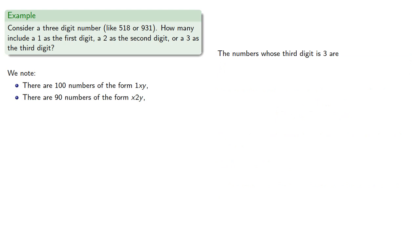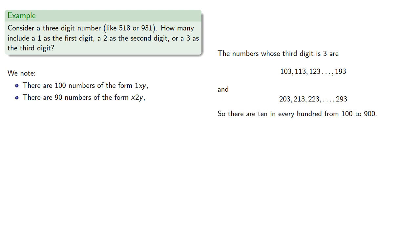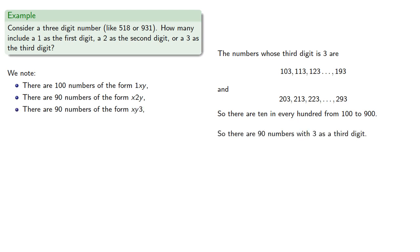The numbers whose third digit is 3 similarly appear in every hundred from 100 to 900, with 10 in every hundred. So there are 90 numbers with 3 as the third digit.